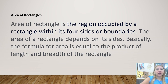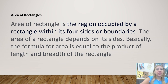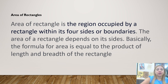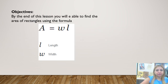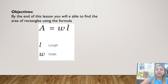We will learn about area of rectangle. The area of a rectangle is the region occupied by a rectangle within its four sides or boundaries. The area of a rectangle depends on its sides. Basically, the formula for area is equal to the product of length and width of the rectangle. By the end of this lesson, you will be able to find the area of a rectangle using the formula: A equals W times L.